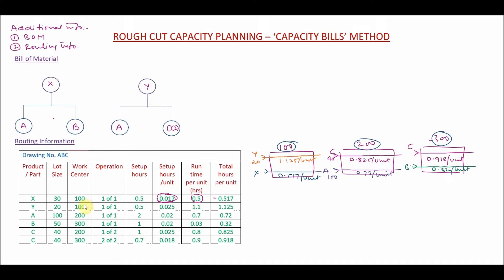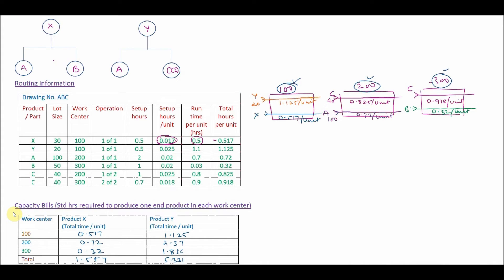We can transform this data and display it in the form of work centers — how much time is required on work center 100, 200, and 300. This is the capacity bills table, showing the standard hours required to produce one end product at each work center. For producing one unit of X, the time required on work center 100 is 0.517 hours, on 200 is 0.72 hours, on 300 is 0.32 hours, for a total of 1.557 hours.